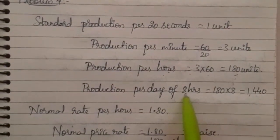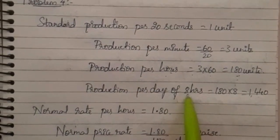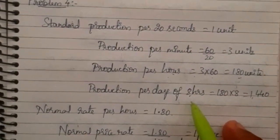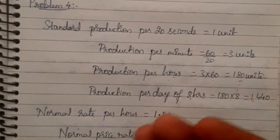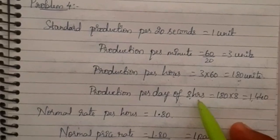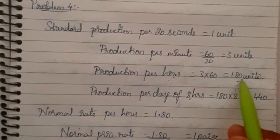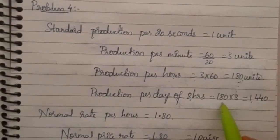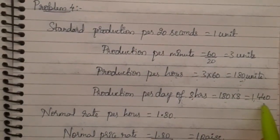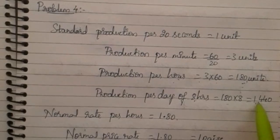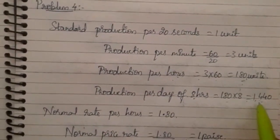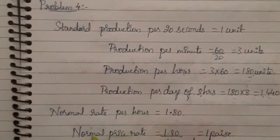Production per day, assuming an eight-hour workday — if the problem specifies a different number of hours we use that, otherwise we assume eight hours. So 180 units multiplied by 8 hours gives 1440 units per day. This is our standard production per day — an employee should produce 1440 units to be paid the normal rate.